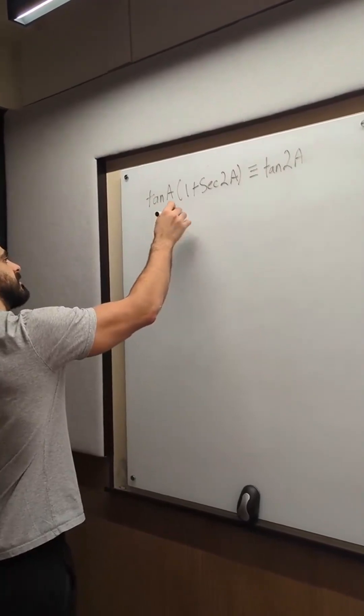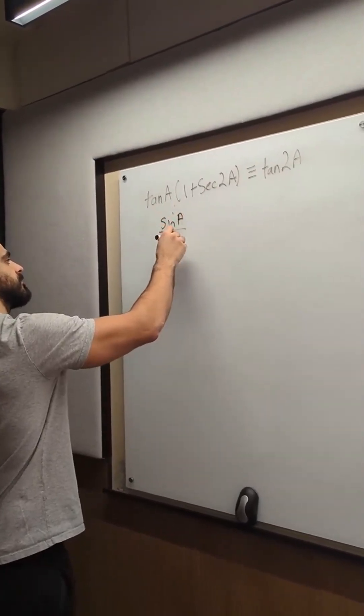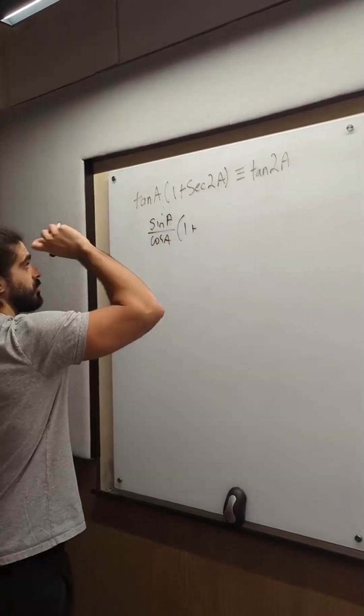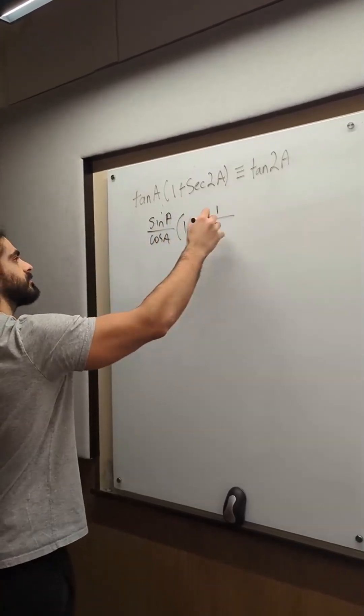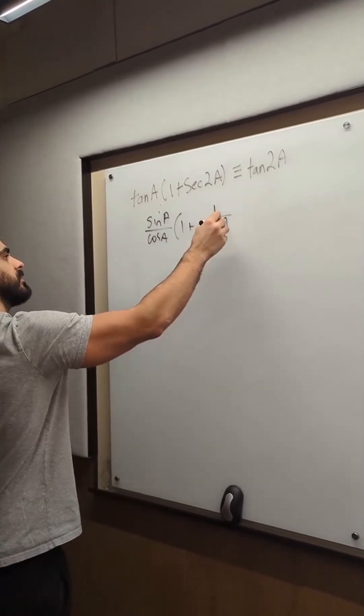So tan is sine over cos. 1 plus sec is 1 over cos, 2a.